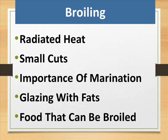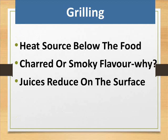Broiling uses radiated heat and is suited to small cuts. Marination is important, as is glazing with fats. Various foods can be broiled. Grilling has the heat source below the food, producing a charred or smoky flavor — this is because juices reduce on the surface.